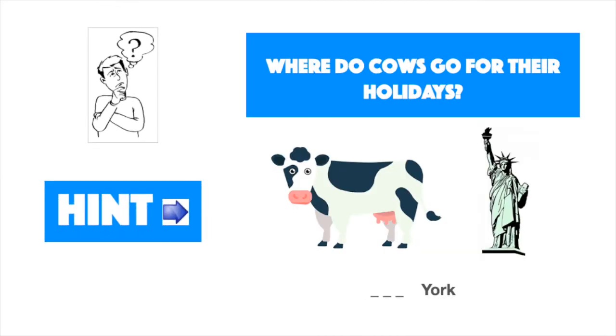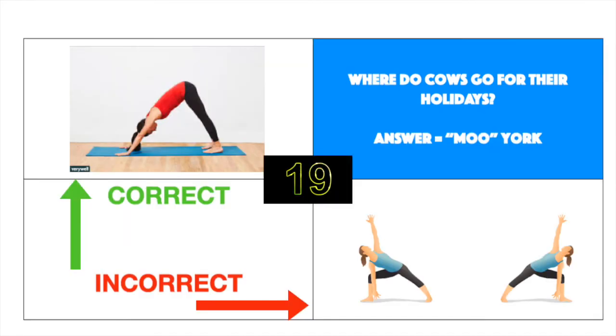Where do cows go for their holidays? Answer, moo-york. Correct, hold a downward-bound pose. Incorrect, hold a side-angle pose.